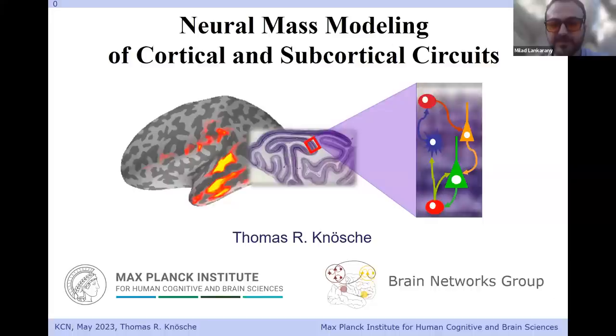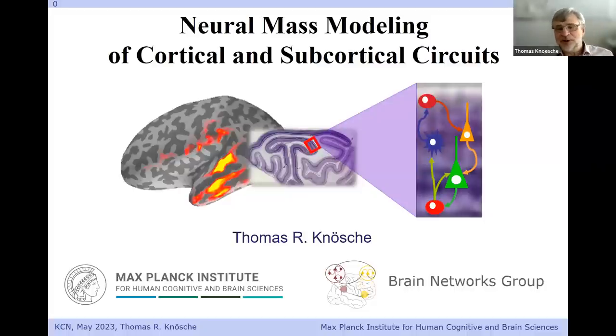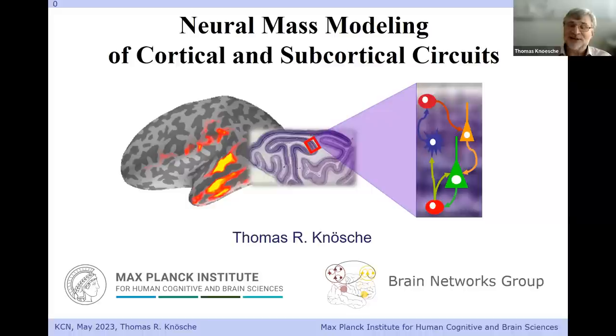Today we have the privilege to have him explain some of his research related to neural mass modeling of cortical and subcortical circuits. My name is Thomas Knösche. I head the Brain Networks Group at the Max Planck Institute for Human Cognitive and Brain Sciences in Leipzig — the same institute that was previously called the Max Planck Institute for Neuropsychological Research before being renamed.